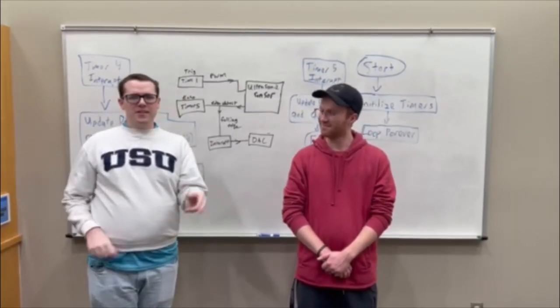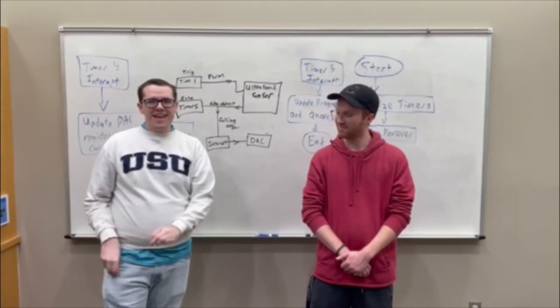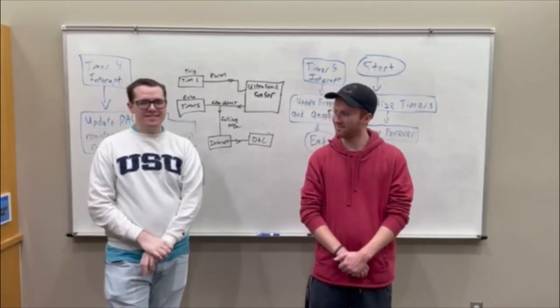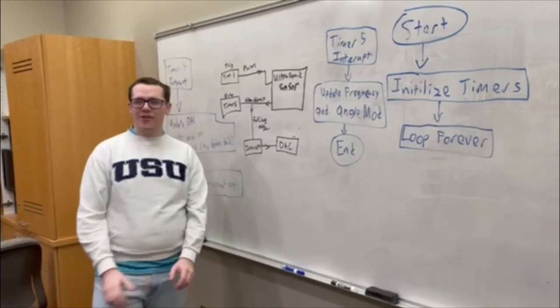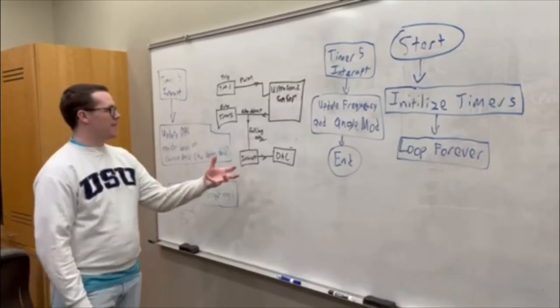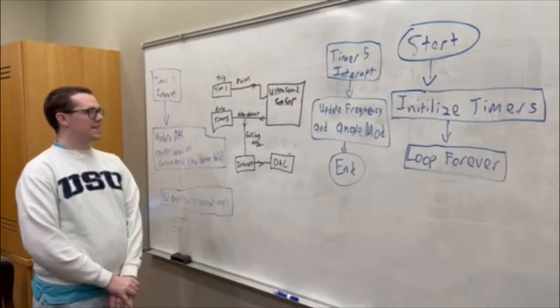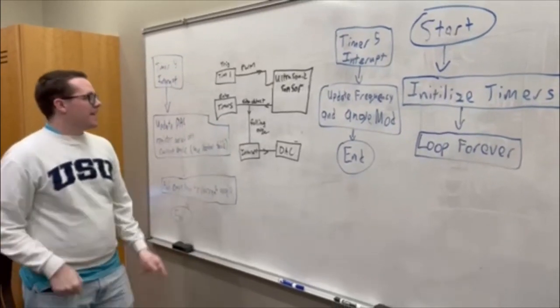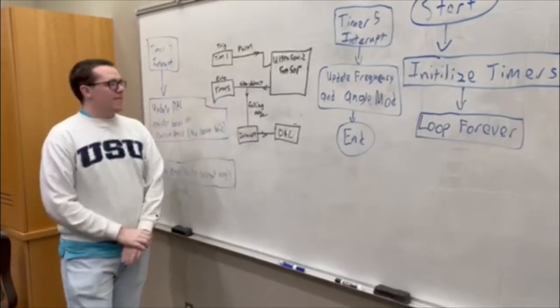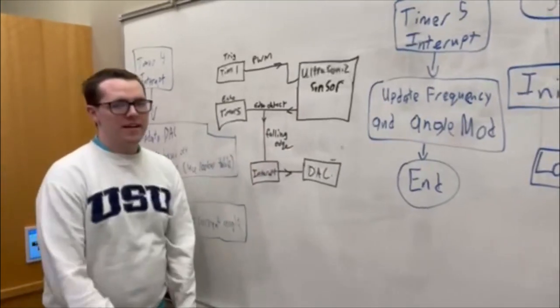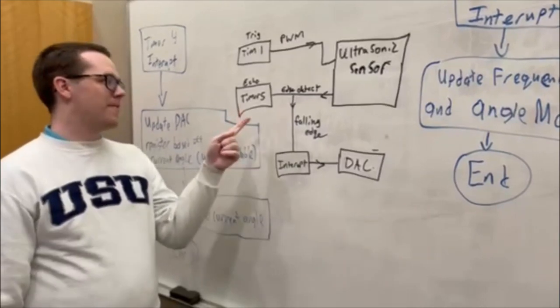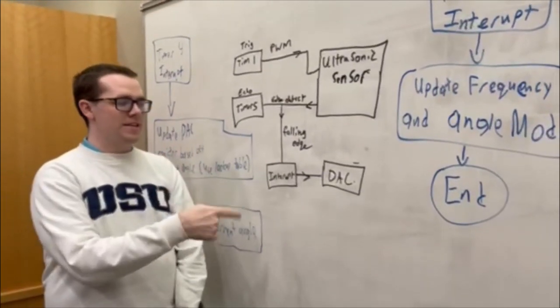I'll explain how the code works in more detail. We're using multiple timers. For Timer 5, we use edge detection: on a rising edge, it resets the count, and on a falling edge, it triggers the interrupt. When Timer 5 is interrupted, it updates the frequency and the angle mod.